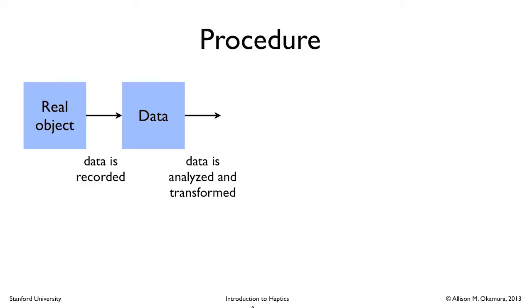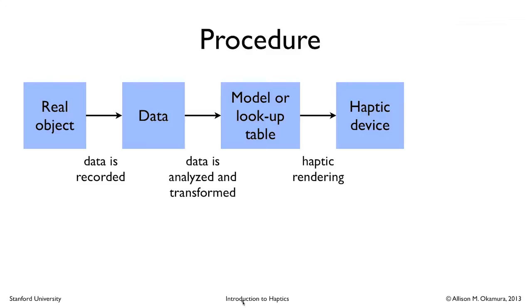The procedure for doing this kind of modeling is that you begin with a real object. You take that object and somehow you record data from it. When you have your hapkit set up properly, you'll actually be able to use the FSR to measure force information, and you can move your hapkit around while it contacts an object to record position information. You'll have a data set, maybe a spreadsheet with columns of times, positions, and forces. Then that data will be analyzed and transformed. You'll create some kind of model or lookup table that can be used in your code to generate a haptic rendering, which you would then be able to interact with using a haptic device.